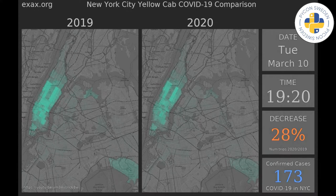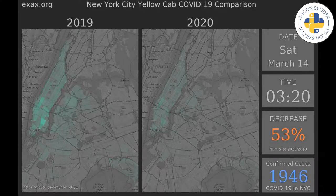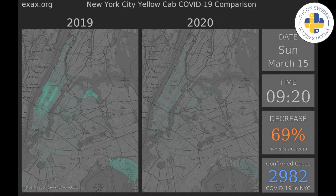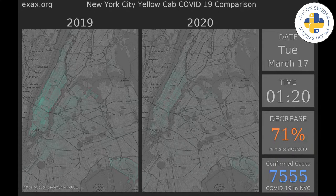To the right we see the date and the time of day. The orange number shows how much less traffic there is in March 2020 compared to 2019.